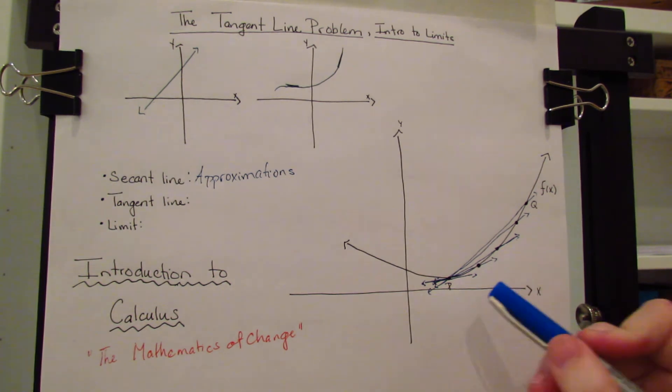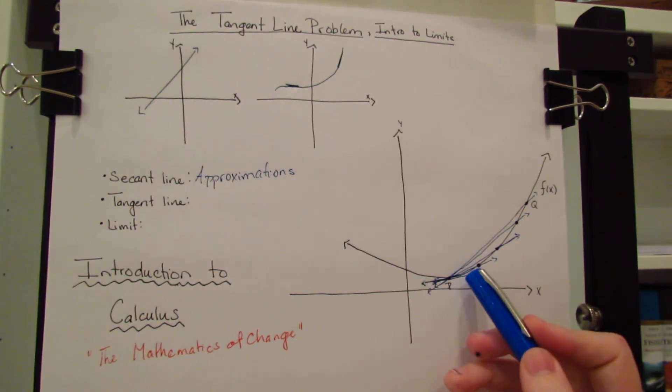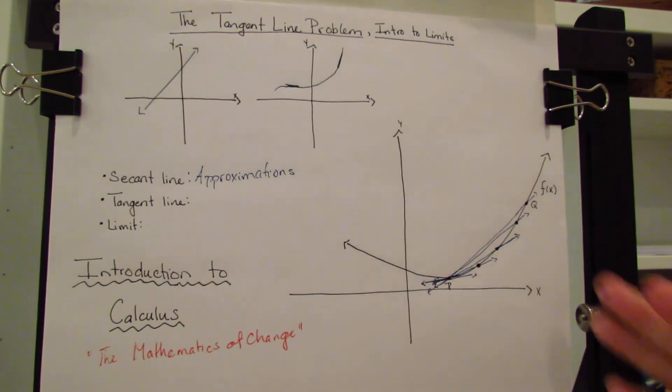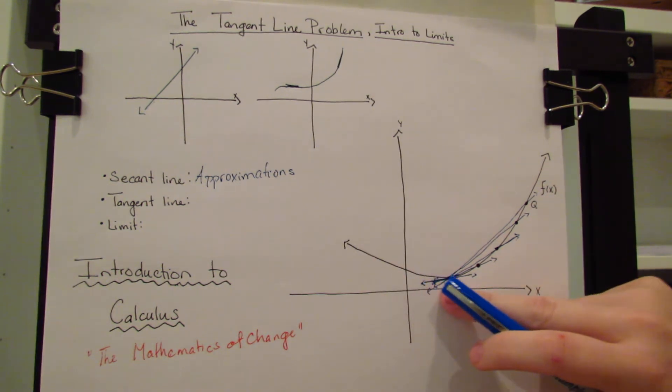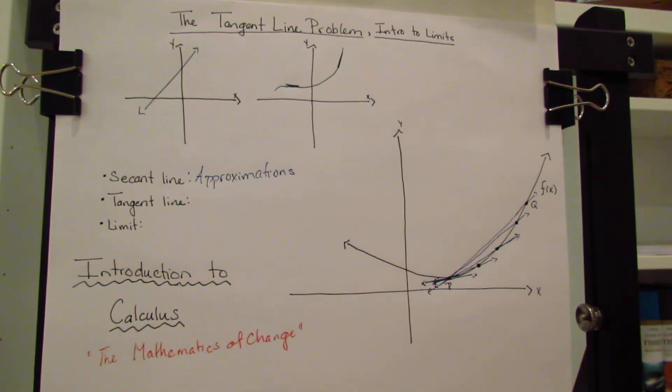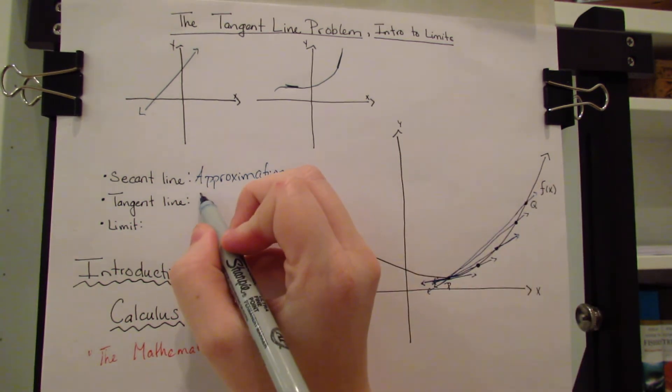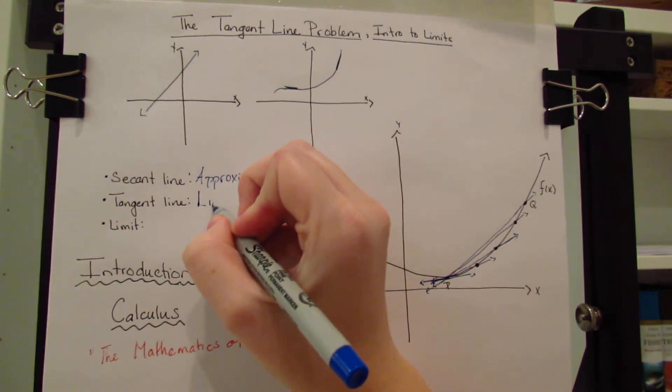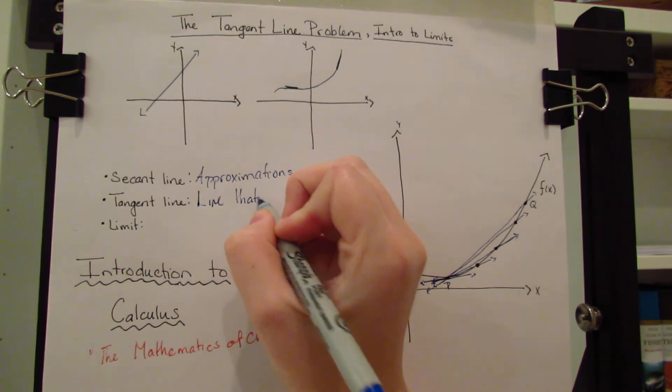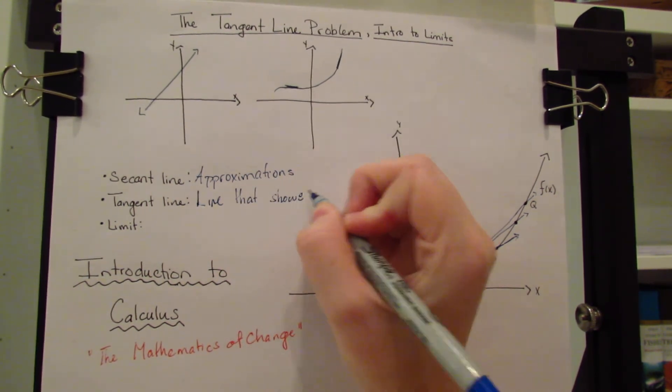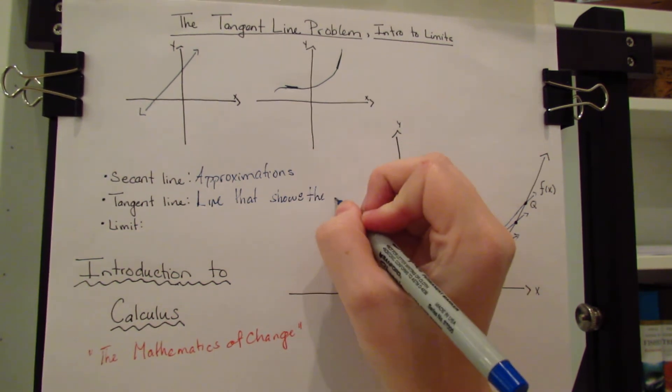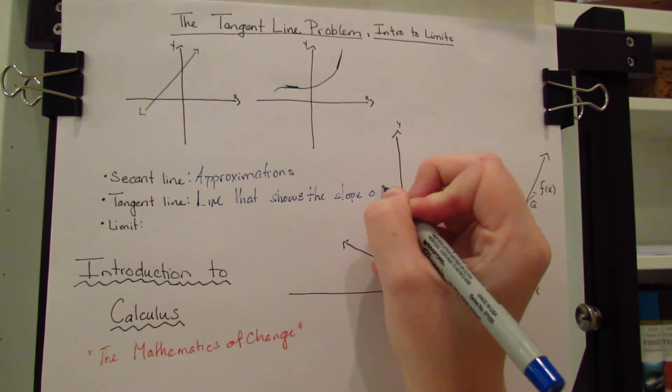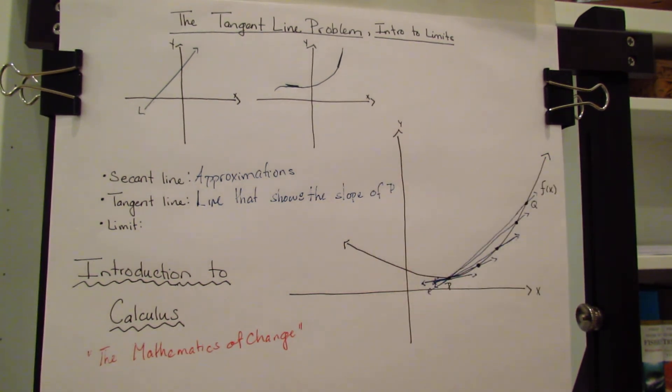Now, this point right here, this point P, and the slope right here, this is the point where Q has gotten all the way to P. And it's gotten more and more accurate until it actually shows the slope of P. This here is called the tangent line. So we'll say the tangent line is the line that shows slope of P, just assuming P's a point.